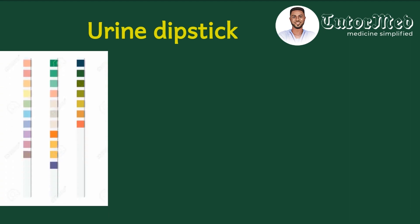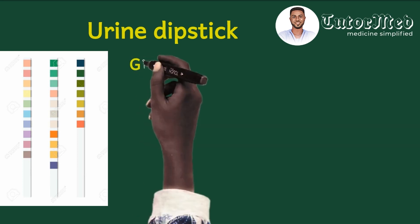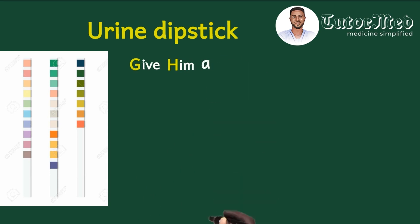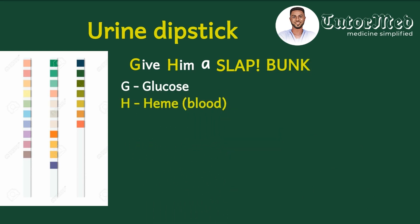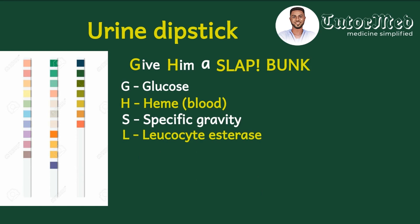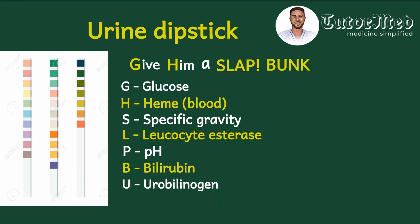The next component of urinalysis is the urine dipstick. After observing the physical appearance, we put a dipstick into a sample of the urine. It detects some color changes, and these color changes correspond to certain substances. The acronym we use is GIVE HIM A SLAP BANK: G for glucose, H for Heme (sometimes labeled as blood), S for specific gravity, L for leukocyte esterase, P for the pH of the urine, B for bilirubin, U for urobilinogen, N for nitrites, and K for ketones. In our second video we will look in detail at how to interpret the urine dipstick.